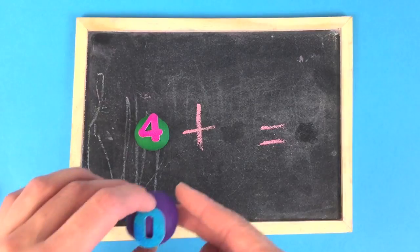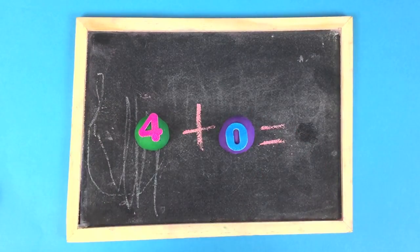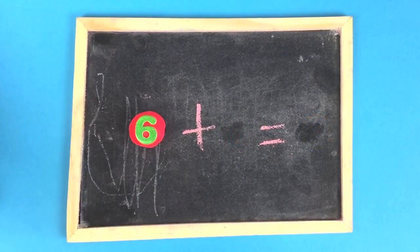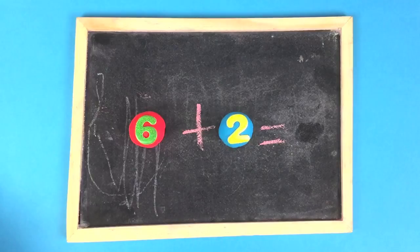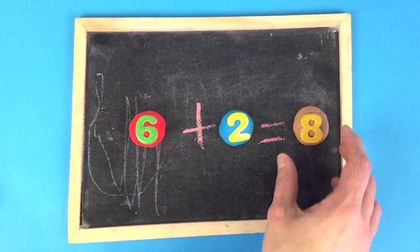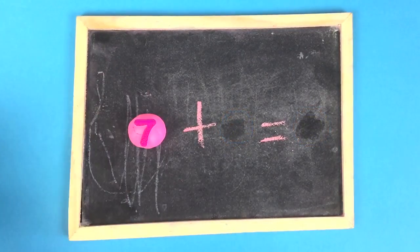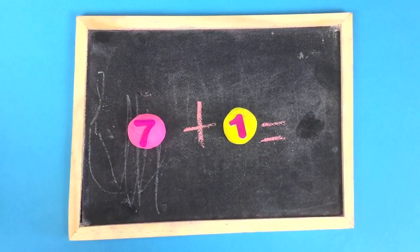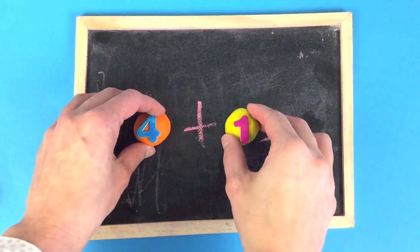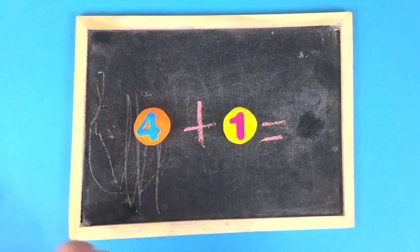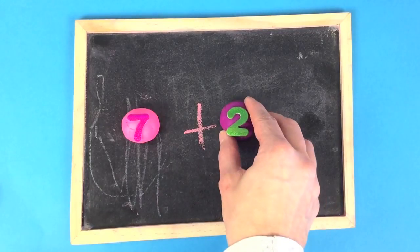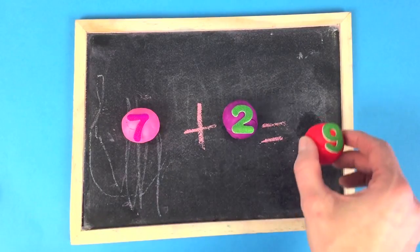4 plus 0 is 4. 6 plus 2 is 8. 7 plus 1 is 8. 4 plus 1 is 5. 7 plus 2 is 9.